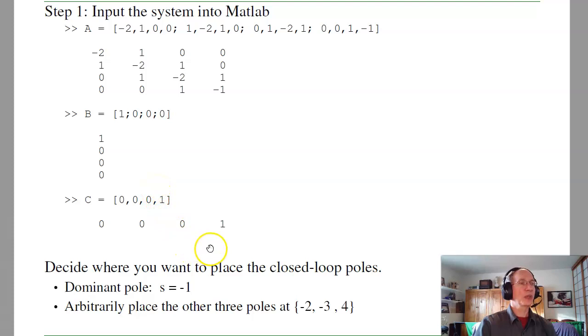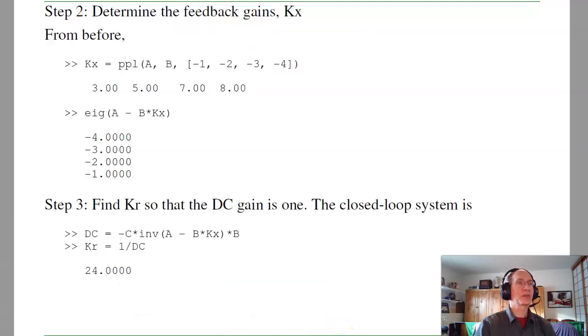The first step is input the A matrix, B matrix, and C matrix. Decide where you want to put the poles. I want to have the dominant pole at minus 1, so put the dominant pole at minus 1, and the other poles someplace faster at minus 2, 3, 4. That isn't quite fast enough, they're going to have some effect on the dominant pole, but it makes a nice simulation. From before, the feedback gains that do that are 3, 5, 7, and 8. And if I check, the closed-loop poles are at minus 1, 2, 3, and 4.